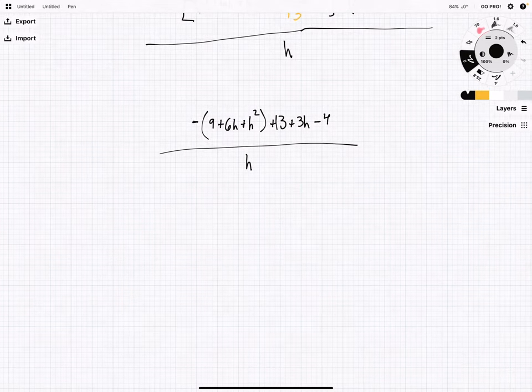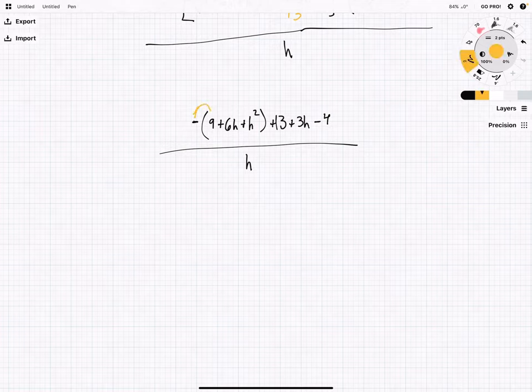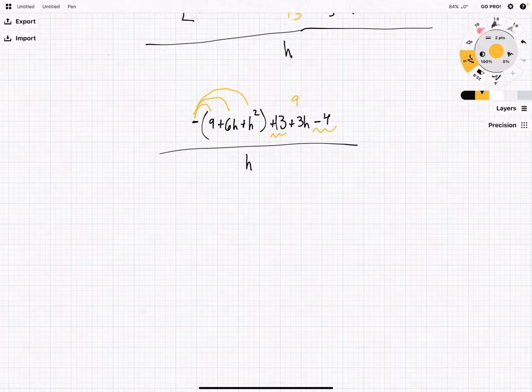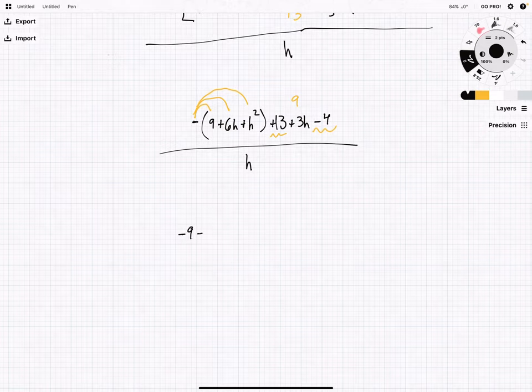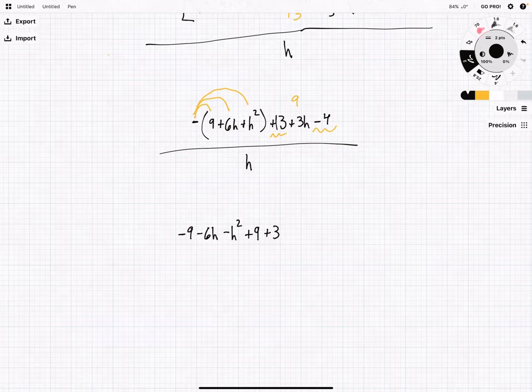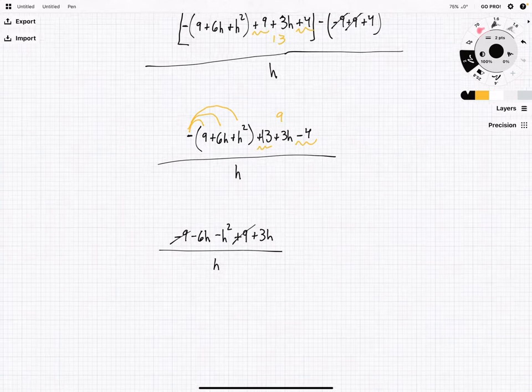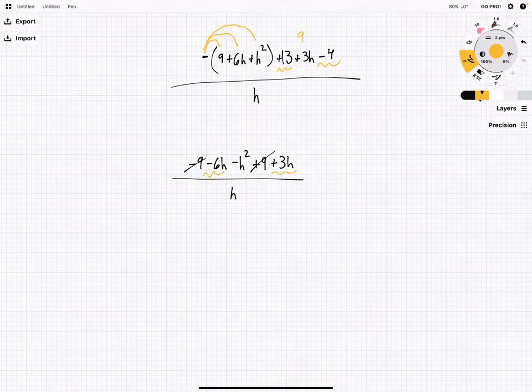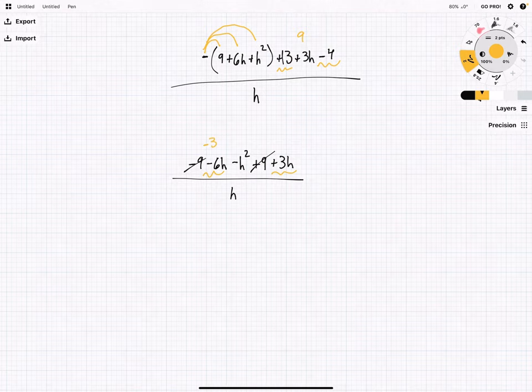Okay. Now, what we're going to do is we're going to distribute this negative sign. And I'd also like to combine this positive 13 and this negative 4 to give us 9. So, now we have negative 9 minus 6h minus h squared plus 9 plus 3h all over h. We'll see our 9's cancel out. And our negative 6h and positive 3h will combine to give us a negative 3h.